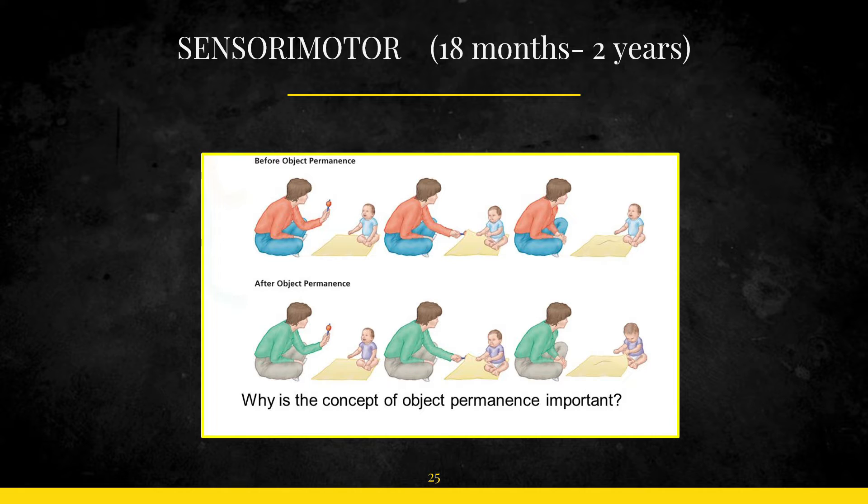The child in this stage faces something known as object permanence. So usually what happens is the child assumes that if it's looking at a toy, the toy will suddenly vanish as soon as the child closes its eyes. But at this stage Piaget said that the child develops a sense of object permanence or object constancy. They understand that an object exists even when they cannot be seen.